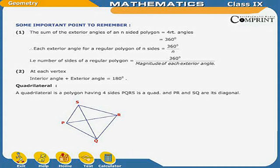Therefore, each exterior angle for a regular polygon of n sides is equal to 360 degrees divided by n. That is, the number of sides of a regular polygon is equal to 360 degrees divided by the magnitude of each exterior angle.